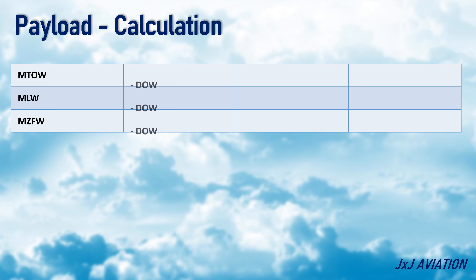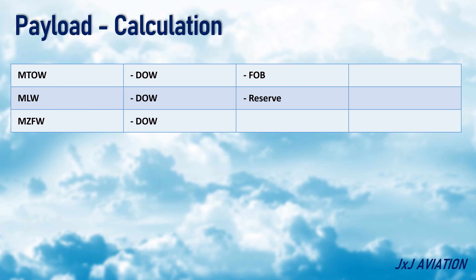In the second column, we need to write the dry operating weight of the aircraft, which is to be subtracted from the values in the first column. Do note that the dry operating weight differs for different aircraft of the same type. In the third column, write fuel onboard in the first row and the reserve fuel in the second row. These are values which again need to be subtracted. The third row can be left empty.